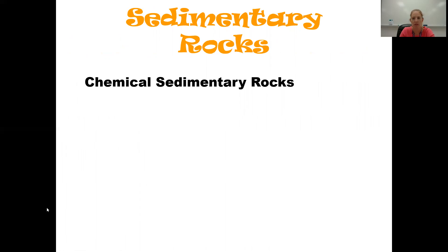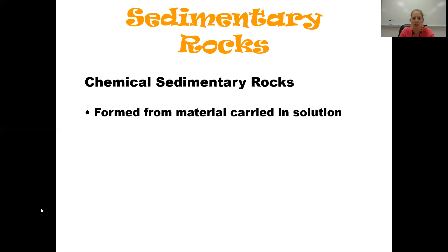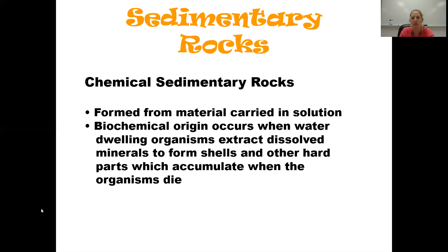Those were the detrital sedimentary rocks. Now for chemical sedimentary rocks — a different category, not listed in any particular order. These form because minerals were dissolved in solution, like in river water, and then they precipitate out — they're no longer dissolved and fall to the bottom, for example — forming our chemical sedimentary rocks.